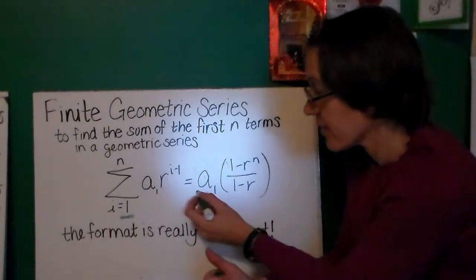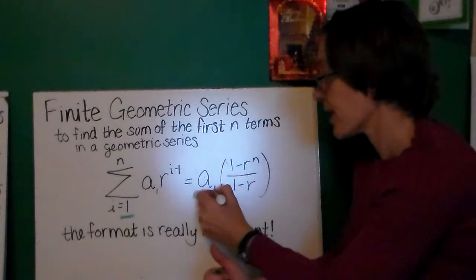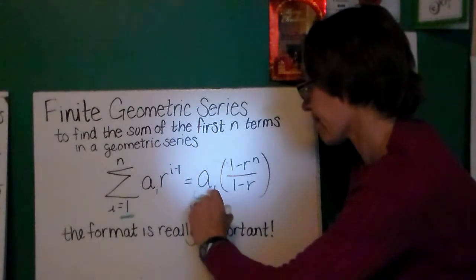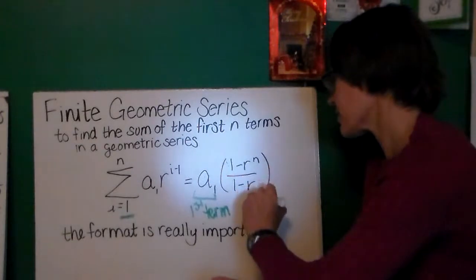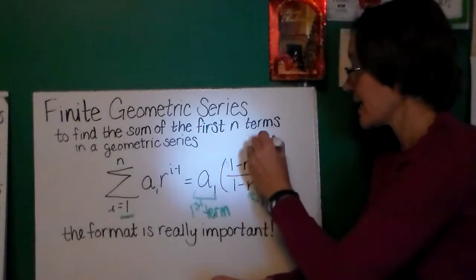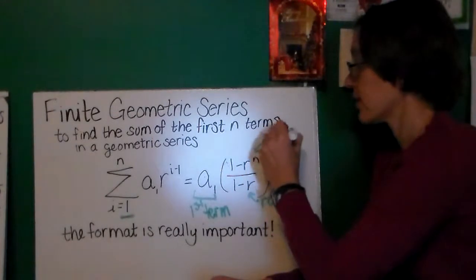Here, we're going to take our numbers from this expression. Again, a_1, the first term. R, here and here, is going to be our ratio. And n is the number of terms.